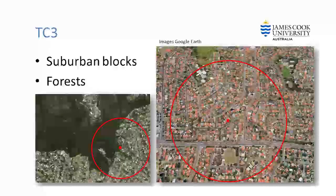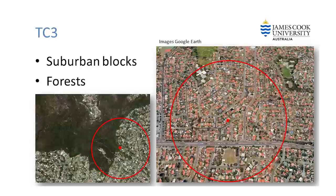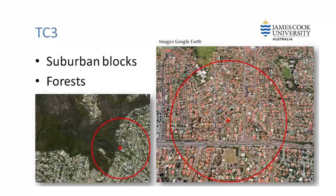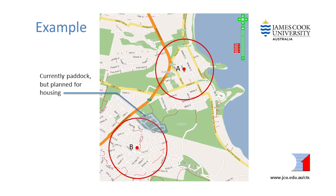Terrain category 3 applies to fully developed suburban areas with more than 10 houses per hectare. Parks smaller than 250,000 square metres can still be included in terrain category 3. Dense forests can also be considered terrain category 3 if they are permanent. In this example, there is an ocean within 500 metres of the house at site A, so it is TC1.5. Site B has vacant land in a new development within 500 metres, but the land will be developed within the next five years, so the site is TC3.